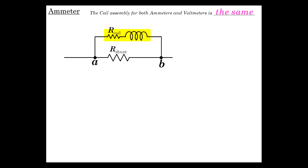So let's do the analysis of an ammeter. Recognizing, as I had just mentioned, that the basic guts or the coil assembly, the D'Arsonval movement for both ammeters and voltmeters is identical. And we're just going to see that we add resistors in such a way to make them one or the other.